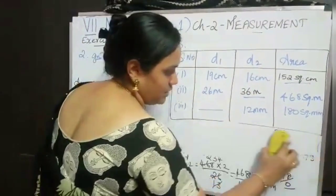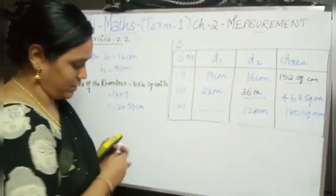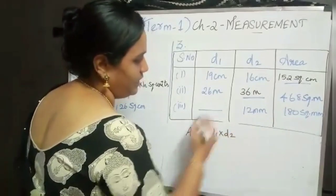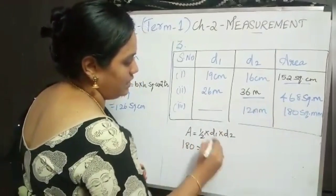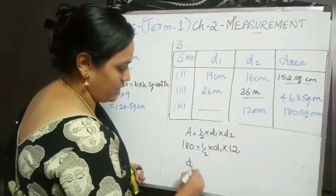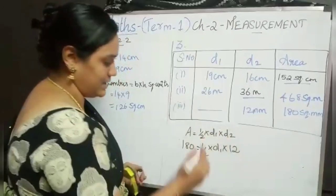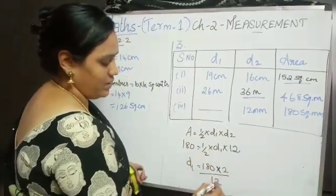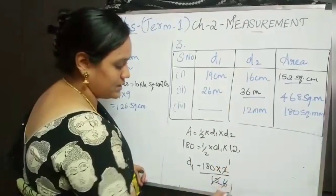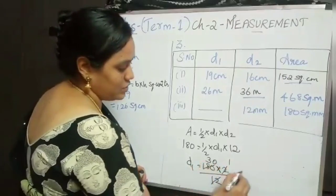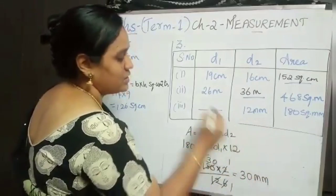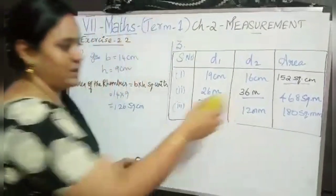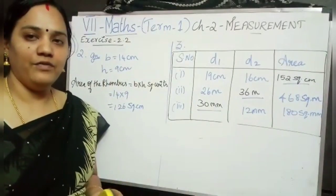Now for the third option, area equals half into D1 into D2 — same formula. Area is given as 180, D1 we have to find out, and D2 is 12. Taking 1 by 2 and 12 to the other side: D1 equals 180 into 2 divided by 12. Cancelling: 1 2s are 2, 6 2s are 12; 1 6s are 6, 3 6s are 18. So my answer is 30. Here the unit is millimetre, so 30 millimetre is my answer. Using the formula half into D1 into D2 we found out the missing values.